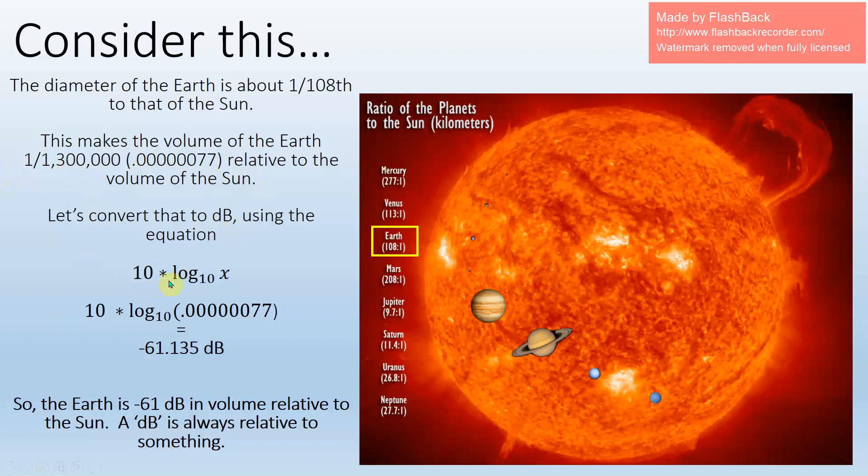So to make it more manageable, let's convert it to decibels. And the equation you use is 10 times logarithm base 10 of x. So you can punch that into a calculator pretty easily. And I've taken 1 divided by 1,300,000, and then in decimal form that's .00000077. So I take 10 times logarithm 10 of .00000077, and it spits out minus 61.135 dB.